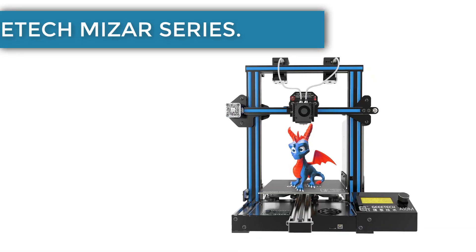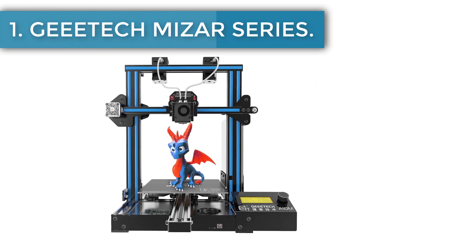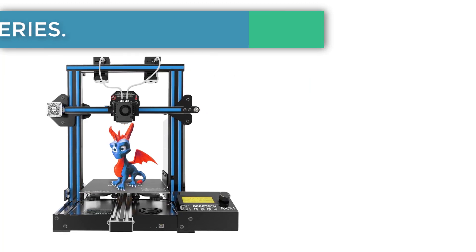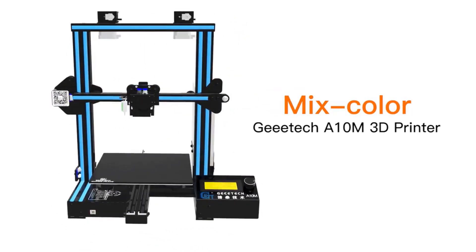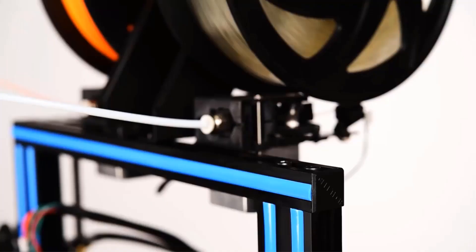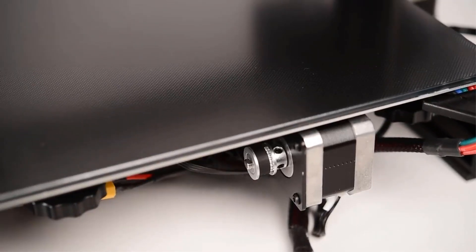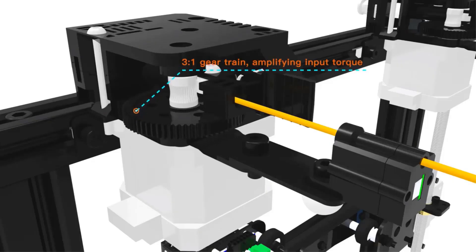Starting at number one, Jeetsch Miser series. If you want to print multicolored prototypes then you might need a 3D printer with several extruders. Jeetsch offers an entire series of 3D printers with dual and triple nozzle designs to satisfy various multicolored printing needs.